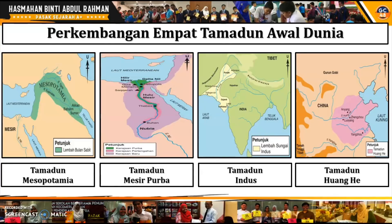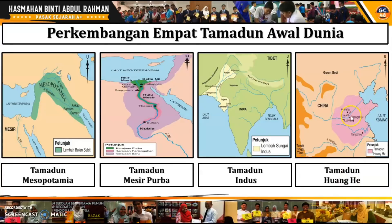Sebelum kita pergi kepada perkembangan 4 Tamadun Awal Dunia, jom kita tengok satu per satu lokasi dengan lebih detail untuk setiap tamadun. Tamadun Mesopotamia terletak antara Laut Mediterania dengan Teluk Parsi, di mana Sungai Tigris dengan Sungai Euphrates mengalir di tengah. Tamadun Mesir Purba pula berkembang di sepanjang Sungai Nil. Tamadun Indus di sepanjang Sungai Indus, dan bandar-bandarnya banyak berkembang di sana. Akhir sekali, Tamadun Huanghe berkembang di sepanjang Sungai Huanghe.